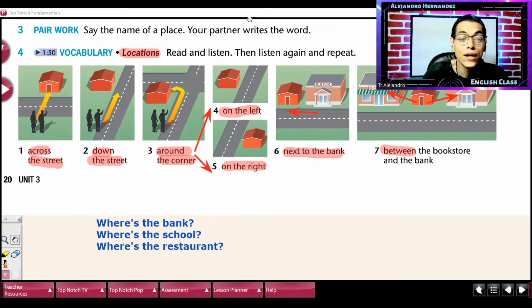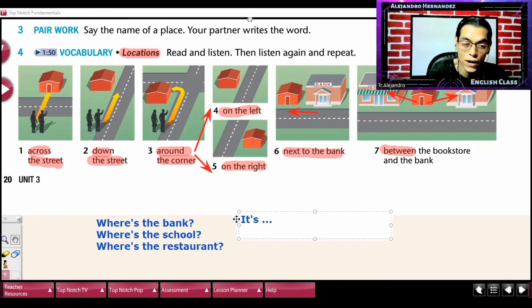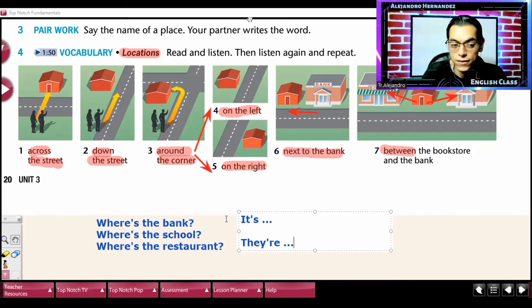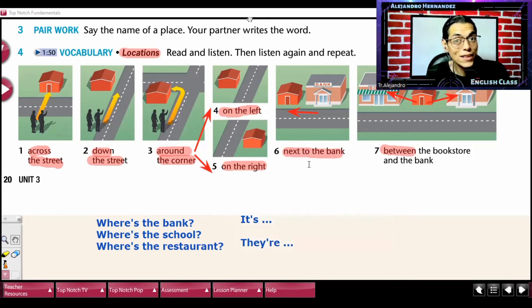Y vamos a contestar con el it is. El it is, si es singular, si estamos hablando de un solo lugar. O they are, they are, si estamos hablando de más de un lugar. ¿Correcto? So, esto es lo que vamos a implementar, chicos, en la actividad de hoy.